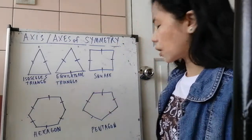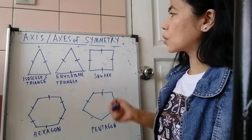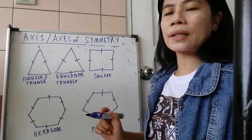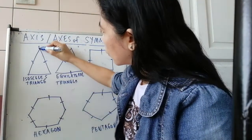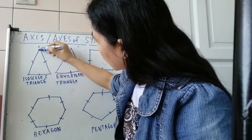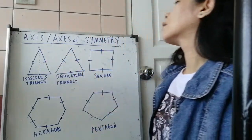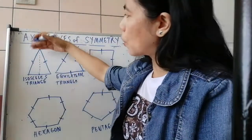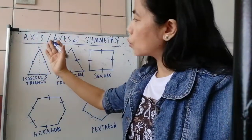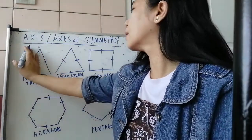Okay, so on the isosceles triangle, wherein we have two sides which are equal, we can only draw one line or one axis of symmetry. So from this point to the base. Okay, so we draw a dashed or broken line to divide the isosceles triangle into two equal parts, left side and the right side.